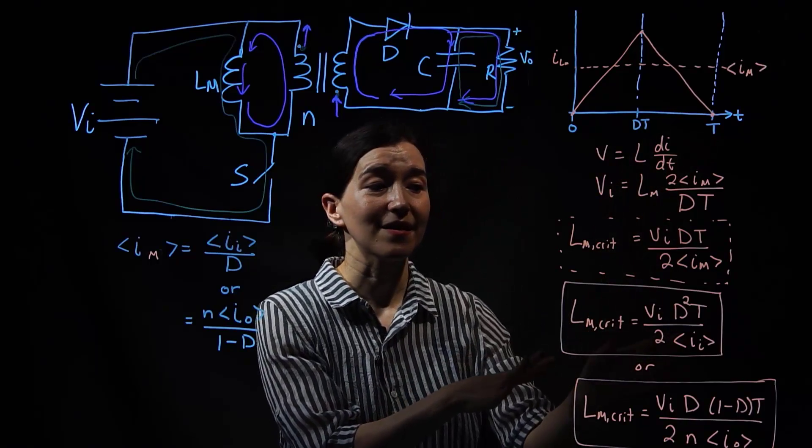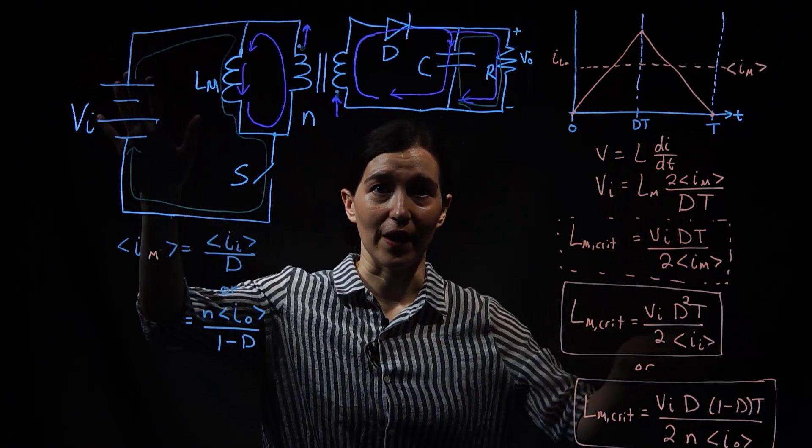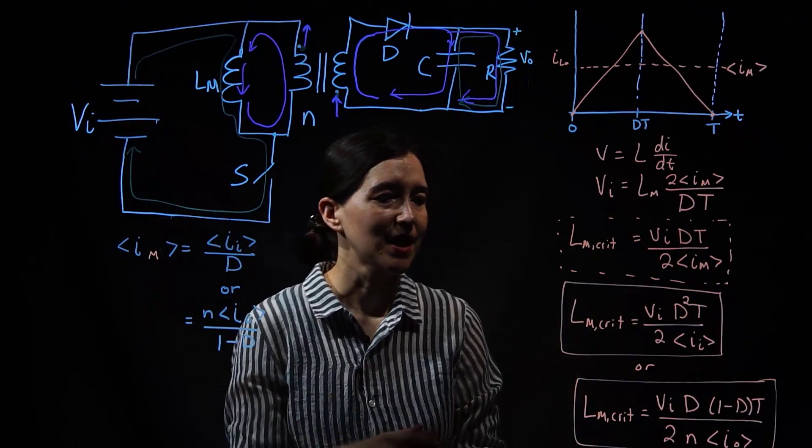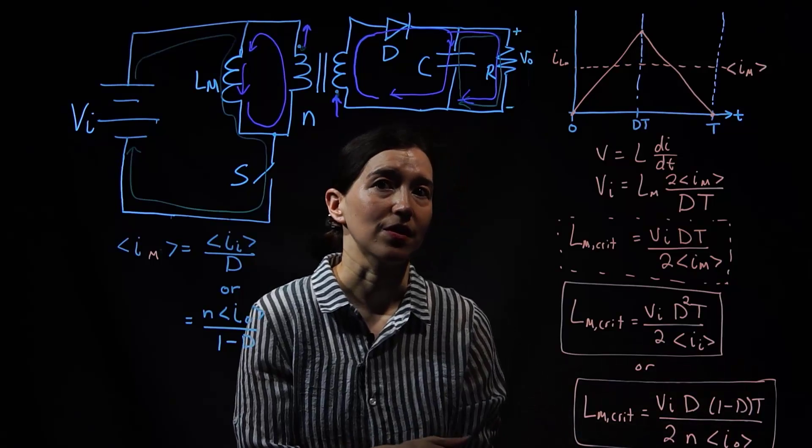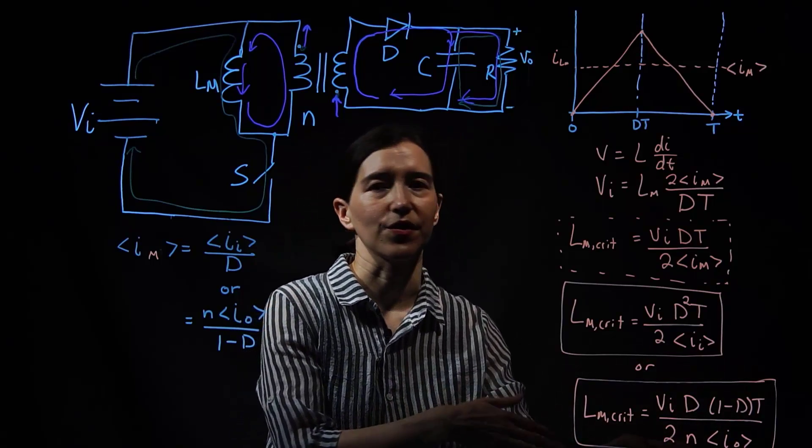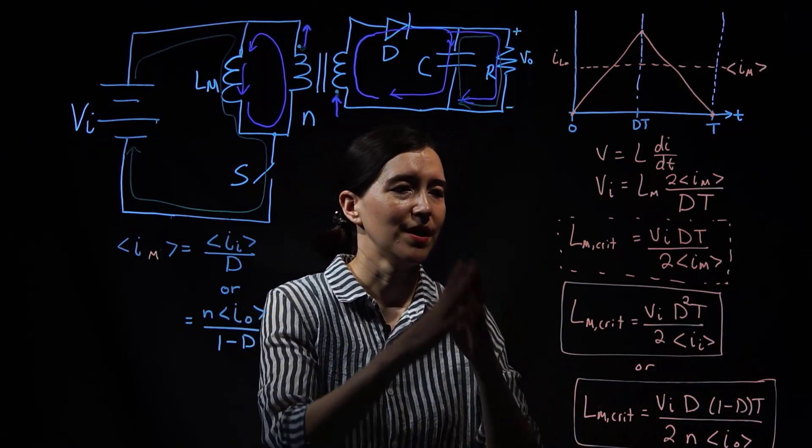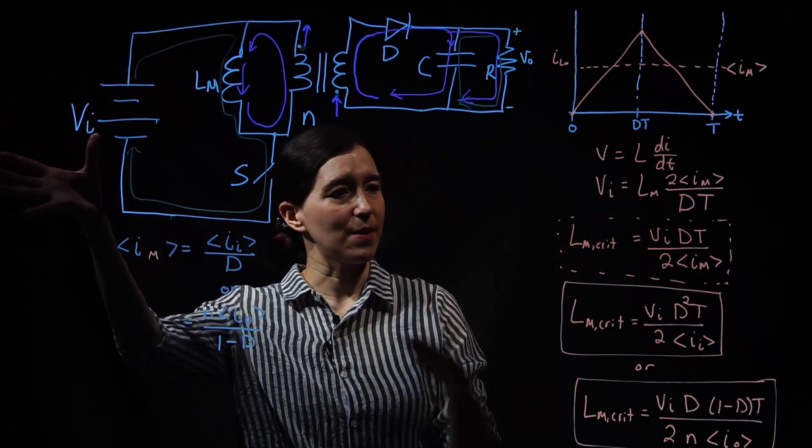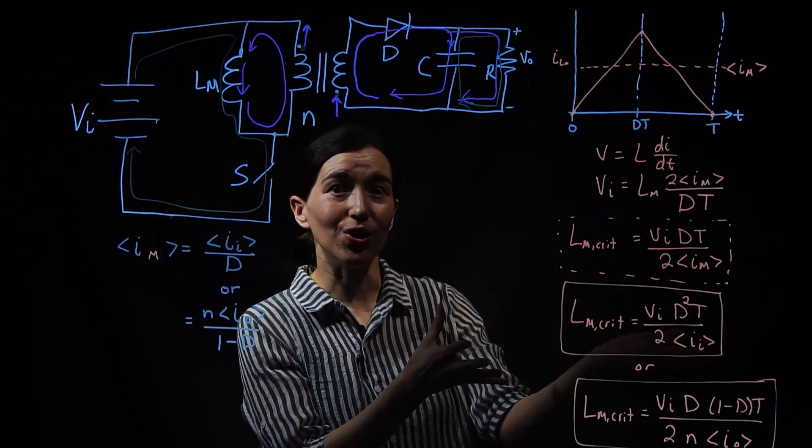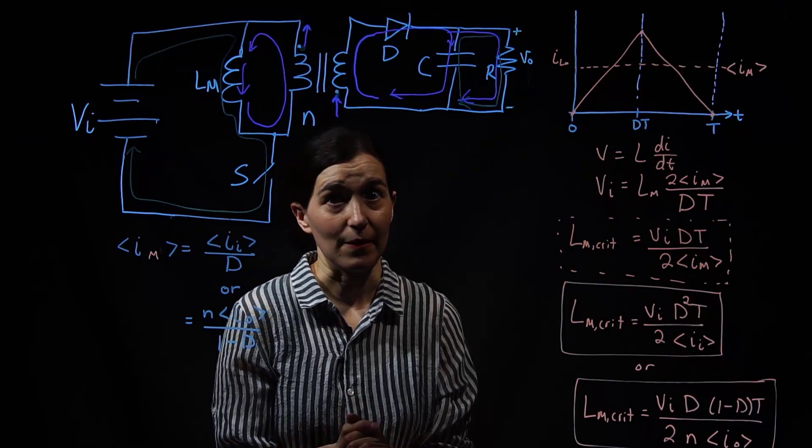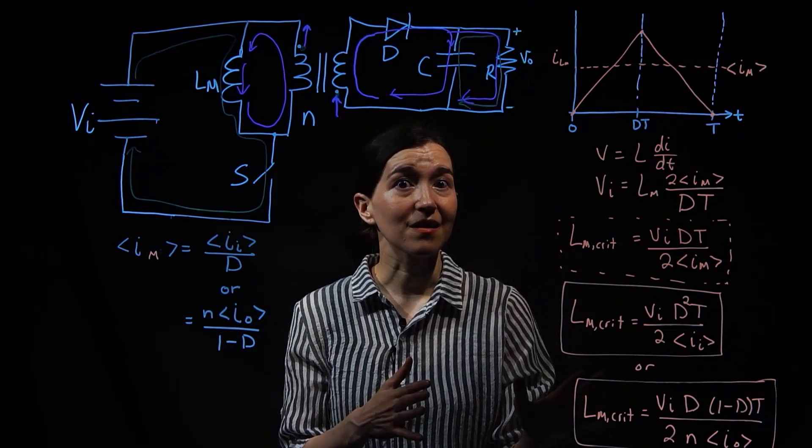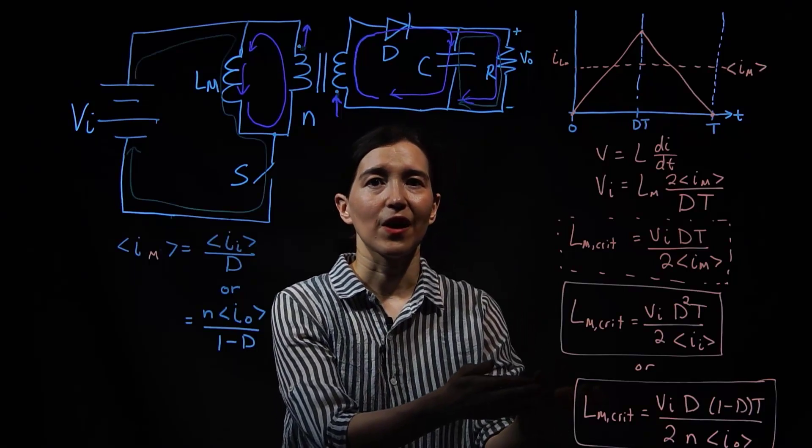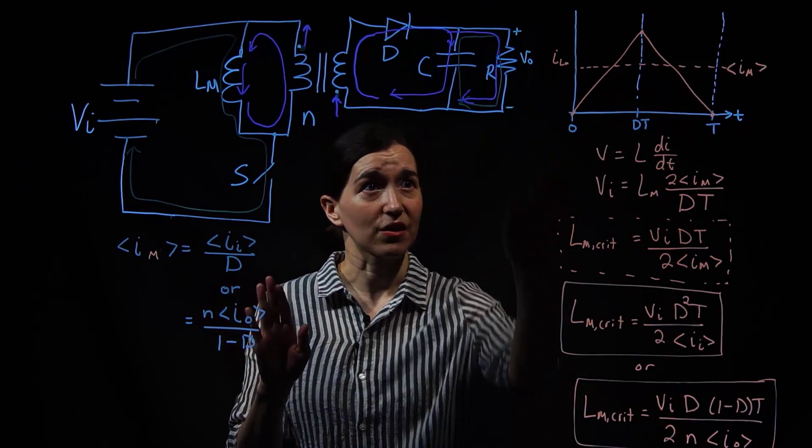And you need to know, in this case, if you know your input current, you can find that directly using this equation. If you know your output current, then you can use this equation here. Here you would also need to know the turns ratio. So if you do power balance onto the input current, it's a little bit fewer terms, but they will give you the same answer. And this would be your critical magnetizing inductance.